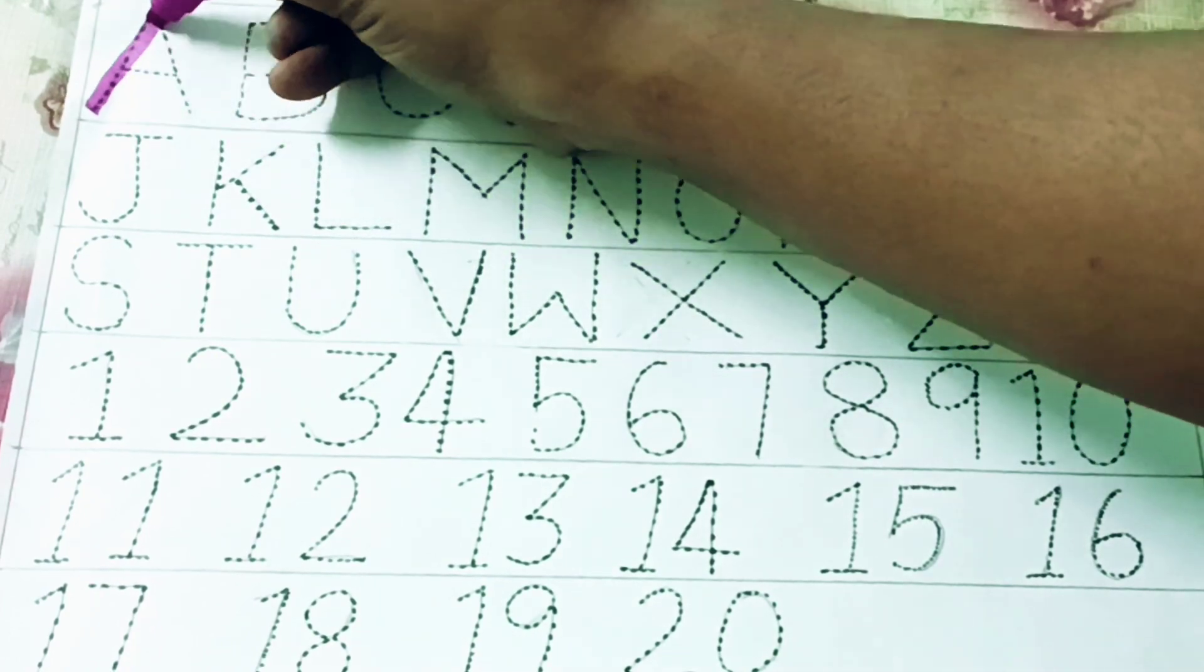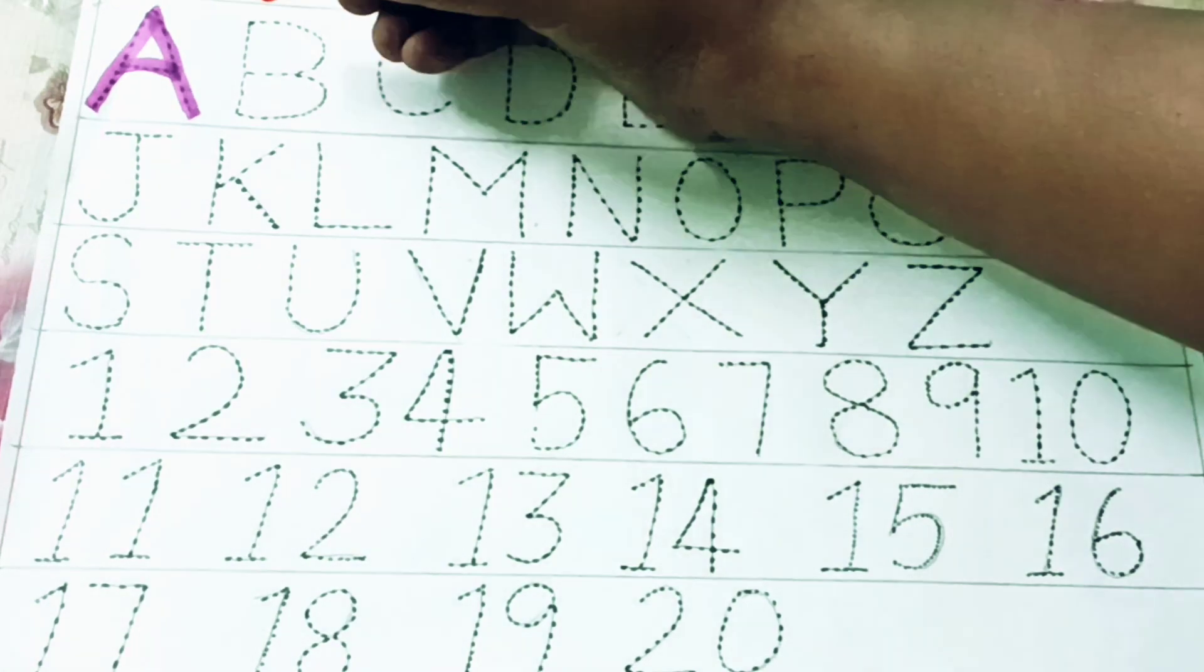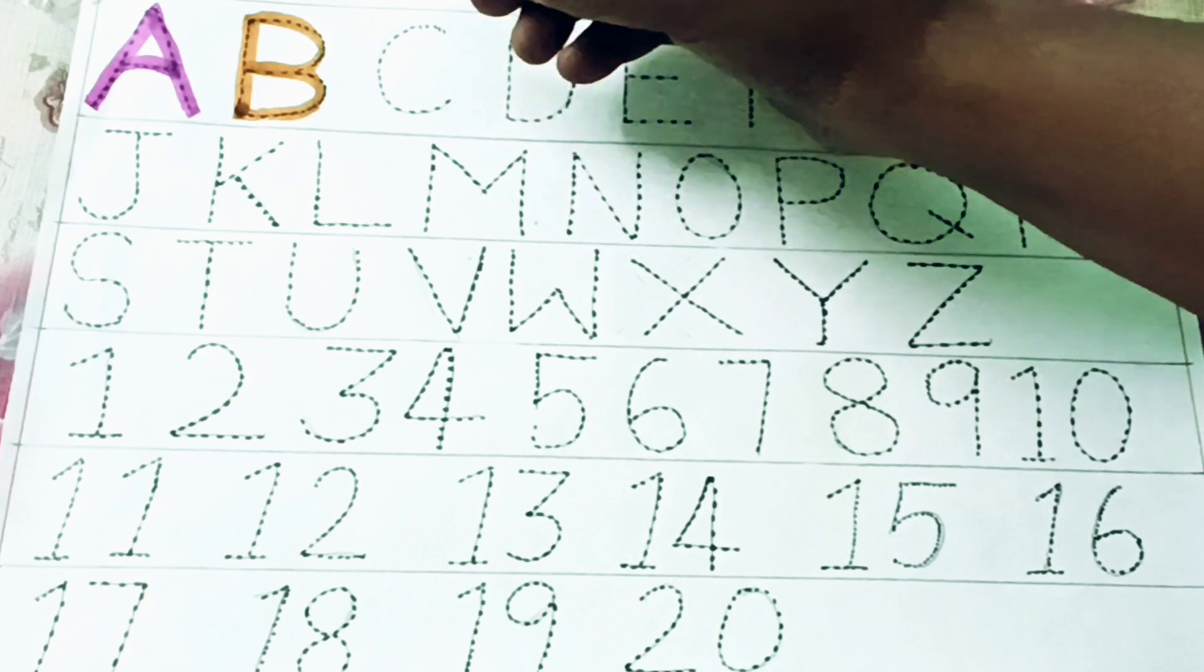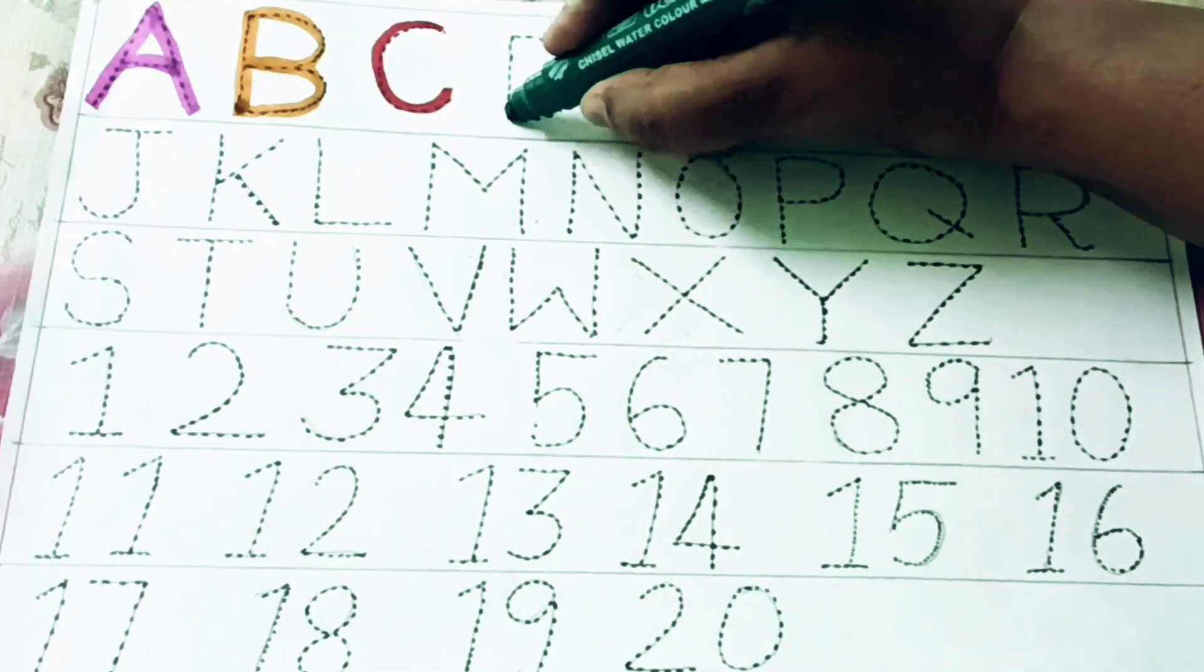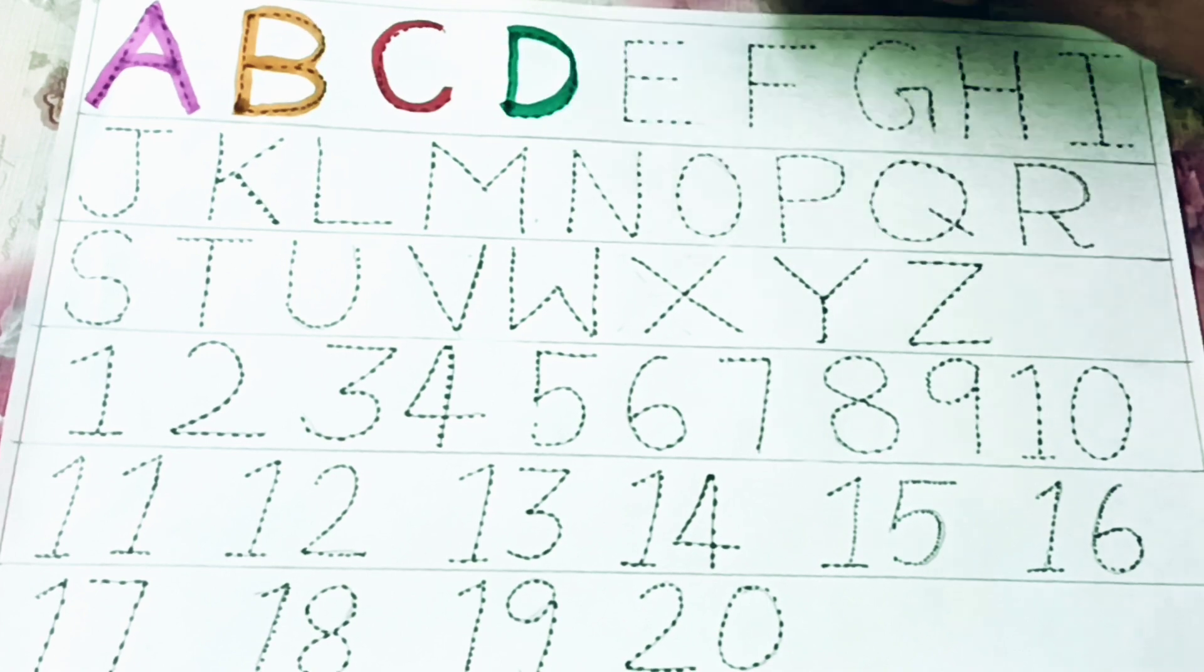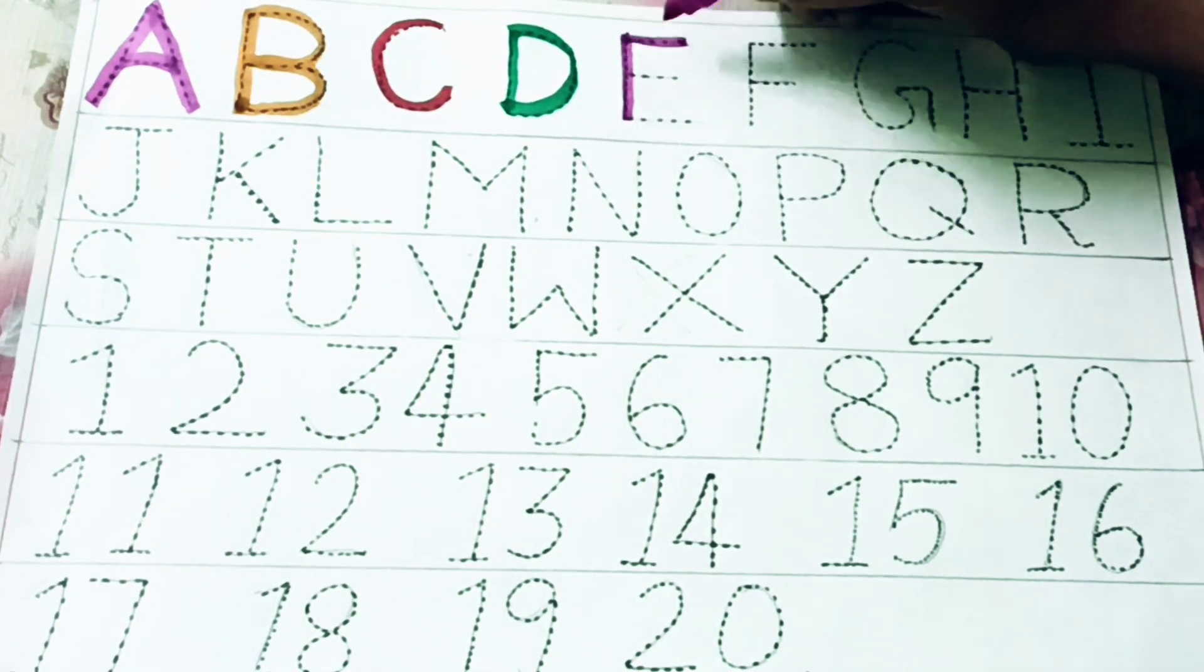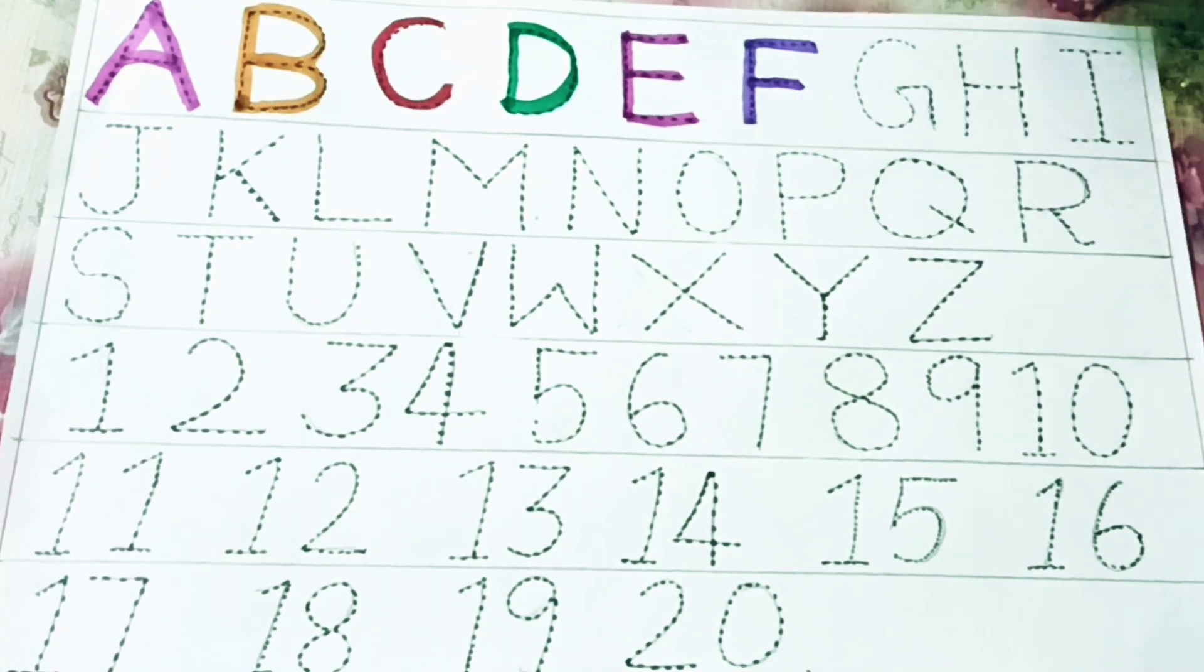Let's write A. A for apple. B for ball, C for cat, D for duck, E for egg, F for fish.